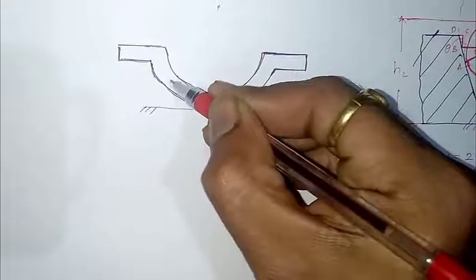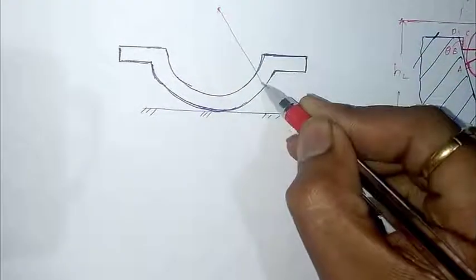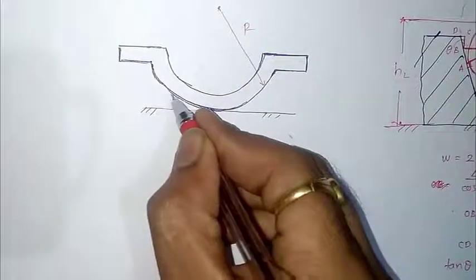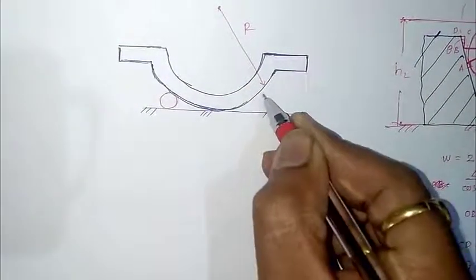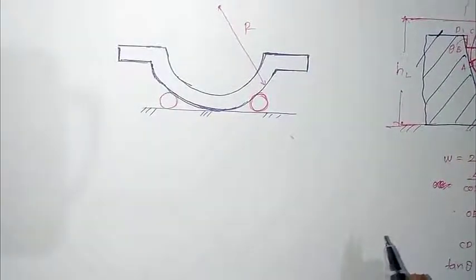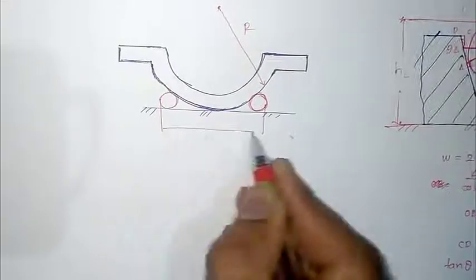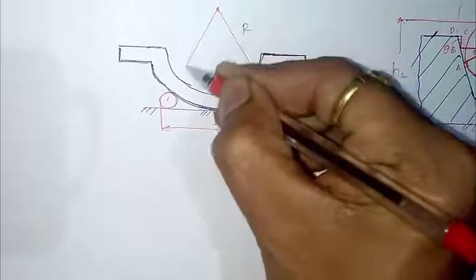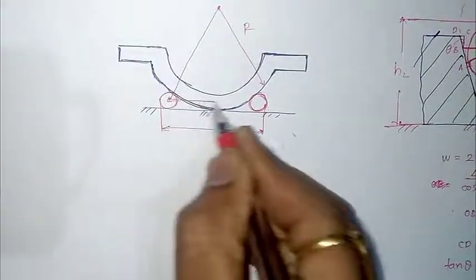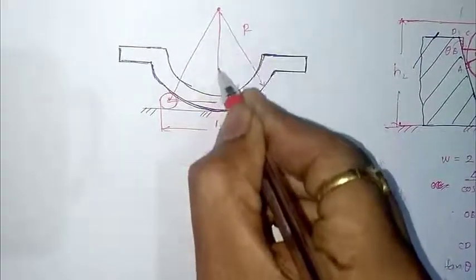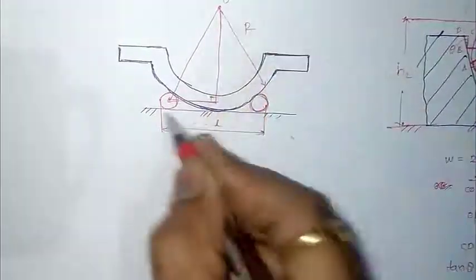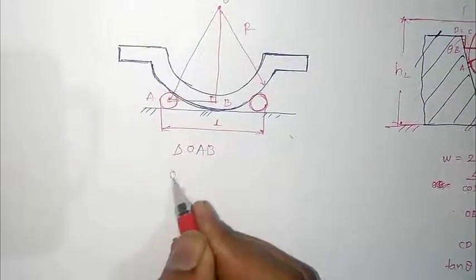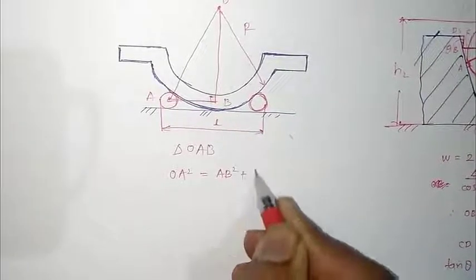Let us call the convex radius as capital R. Make some geometrical constructions. Before that, put rollers at the side of this component. The rollers have equal diameters — let's say small d. Take a measurement outside these rollers and call it small l. Join this point with the center of a roller, draw a horizontal line and a vertical line from this point. This gives 90 degrees. Label the center as O, this point as A, and this point as B. From triangle OAB, apply the Pythagorean theorem: AO² = AB² + BO².